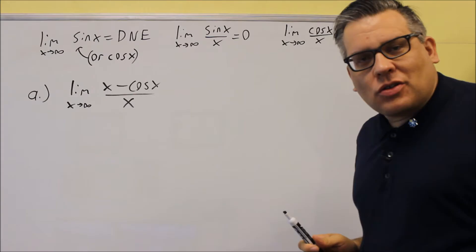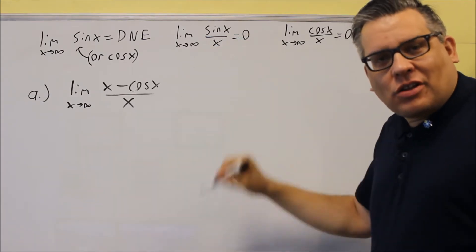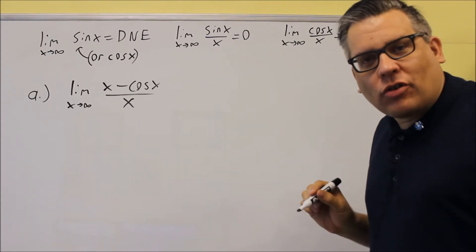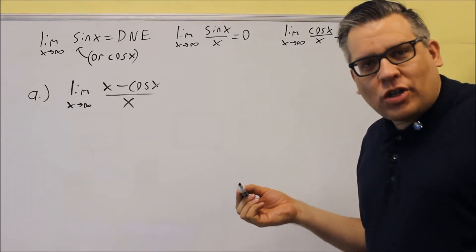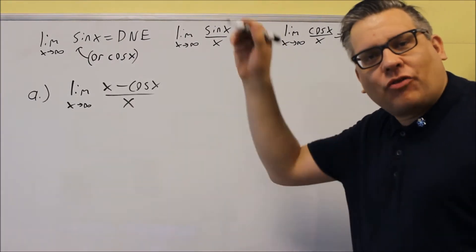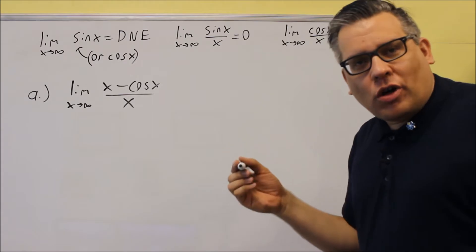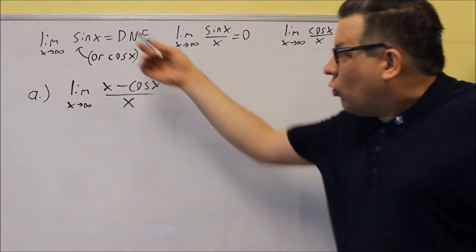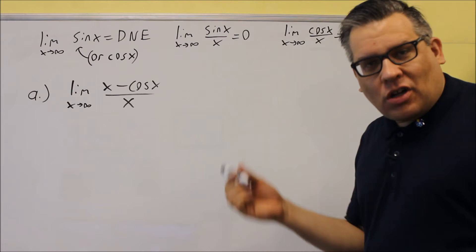Now the reason why is because if you think about sine and cosine, they oscillate. They keep going up and down forever, so it's never going to actually reach a certain number. It just bounces back and forth between negative 1 and 1. So because it's never going to actually reach a number, we say that limit itself does not exist.